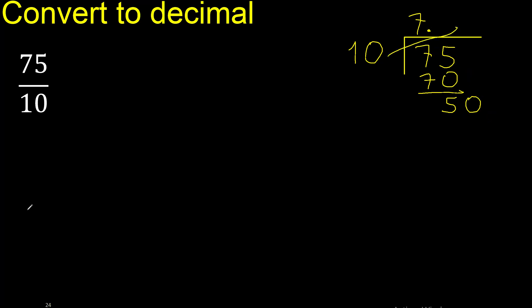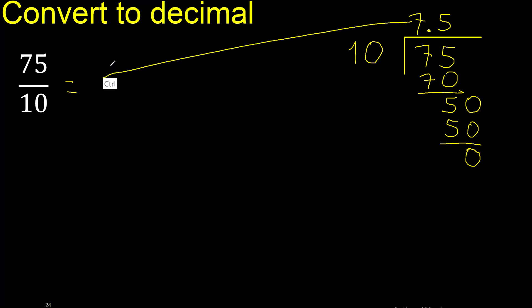Then, multiply by which number? Multiply by 5 is 50 — it is not greater. Subtract: 0. Therefore, finish here.